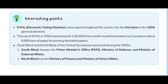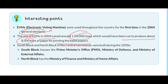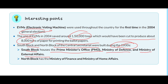Some important facts: Electronic Voting Machines (EVMs) were used throughout the country for the first time in the 2004 general elections. The use of EVMs in 2004 saved around 1,50,000 trees which would have been cut to produce about 8,000 tons of paper for printing ballot papers. South Block and North Block of the Central Secretariat were built during the 1930s. South Block houses the Prime Minister's Office, Ministry of Defence, and Ministry of External Affairs; North Block has the Ministry of Finance and Ministry of Home Affairs.